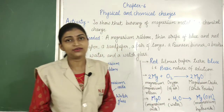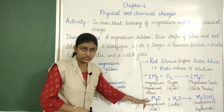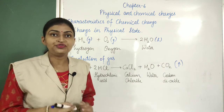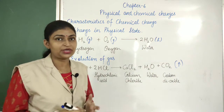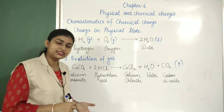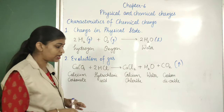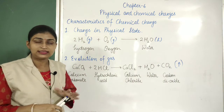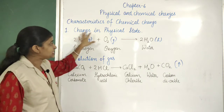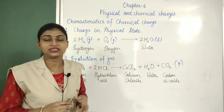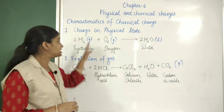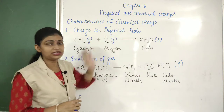Now we will discuss the characteristics of chemical changes. With the formation of a new substance in a chemical reaction, they can possess these characteristics, but this is not compulsory. They may or may not have these characteristics. They can have only one characteristic or more than one. The first one is change in physical state. Basically, change in physical state is a property of physical change, but with the formation of a new substance, change in physical state can also be seen in a chemical change.